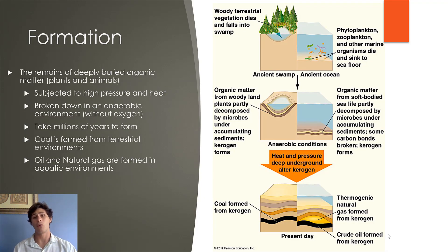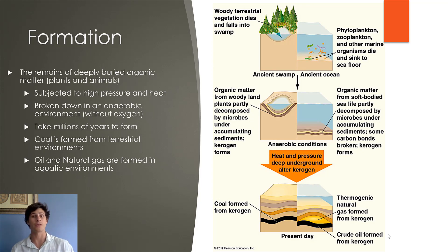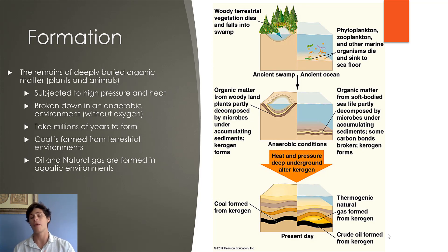Fossil fuels are formed over a very long period of time through a heat-intensive and pressure-intensive process. Organic matter is sequestered deep underground and subjected to enormous amounts of heat and pressure over millions and millions of years. Whether organic matter turns into coal or oil or natural gas depends on where it first originated. Terrestrial sources tend to end up as coal, whereas oceanic sources tend to end up as either oil or natural gas. These substances take millions of years to form, so they are effectively non-renewable resources — once used up, they are gone forever.